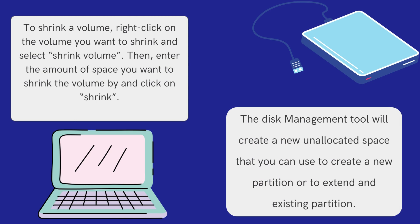To shrink a volume, right-click on the volume you want to shrink and select Shrink Volume. Then enter the amount of space you want to shrink the volume by and click on Shrink. The Disk Management tool will create new unallocated space that you can use to create a new partition or to extend an existing partition.